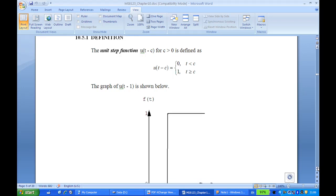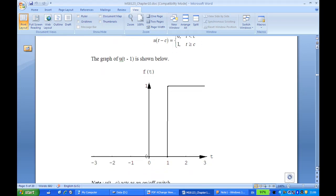Now, in terms of graph, especially the graph of u(t-1), it is equal to 0 for t less than 1, and it's equal to 1 for t greater than or equal to 1.